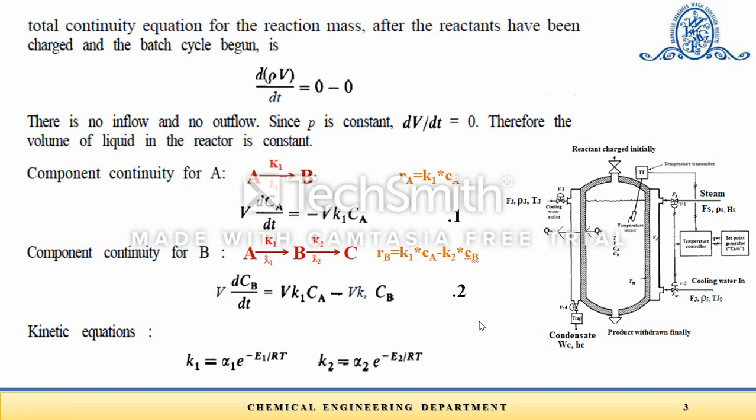Equation 1 gives how C_A changes with respect to time, and equation 2 gives how C_B changes with respect to time. The formation of C_A and C_B also depends on the kinetics K1 and K2, both of which are functions of temperature. We require K1 to be greater than K2.